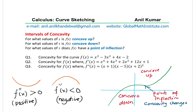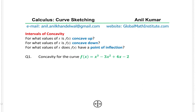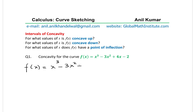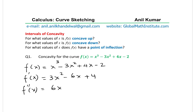For question number one we need to find concave up, concave down, and point of inflection. The function given is f(x) = x³ - 3x² + 4x - 2. Since we are interested in concavity, we find the second derivative. The first derivative is 3x² - 6x + 4, and then the second derivative is 6x - 6, applying the power rule.